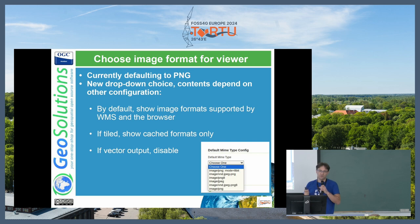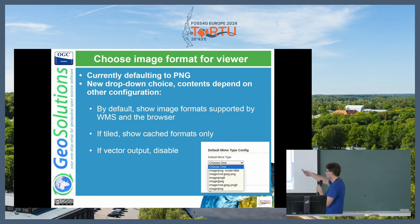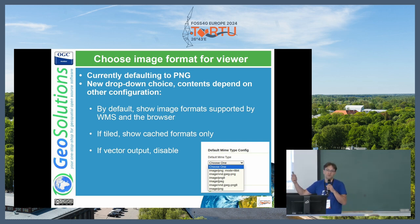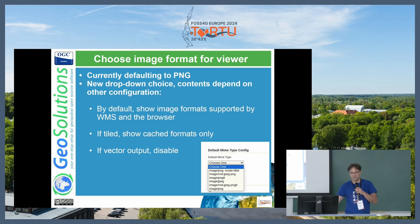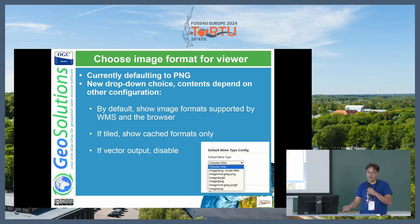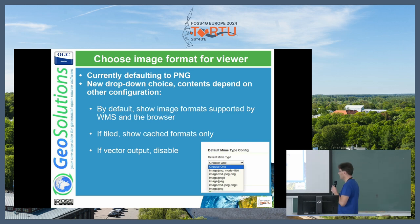In GeoServer, you can choose the image format for the viewer. GeoServer normally defaults to PNG, but now we have a drop-down choice to default to something else like JPEG or MapML itself. This reacts to the other settings — if I'm displaying raster data, it's going to be raster outputs. If I set up MapML to display as vector MapML, then this drop-down will shut down and won't be available anymore because the only format I can use is MapML itself.